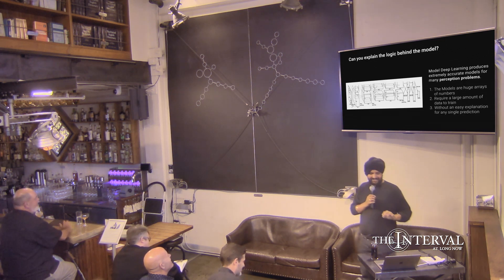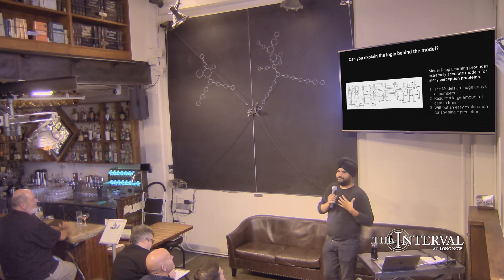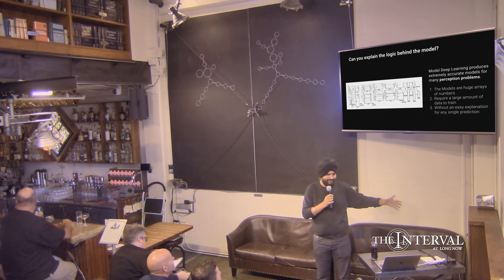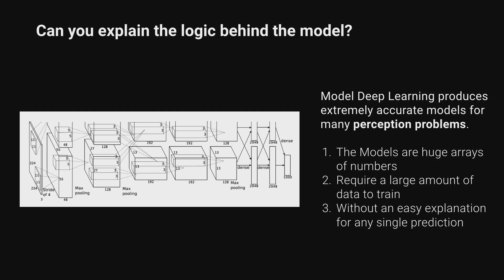So today, in our image detection systems, we run way more complicated models. So this is a deep learning model for people who have seen the news recently. Deep learning is making all sorts of waves in perception problems, things like image classification, text and sound and so on. And in all these perception problems, when you learn these models, they're essentially huge arrays of numbers. That's what a model is these days, like these deep learning models. And they require a large amount of data to train, and there is no easy explanation.